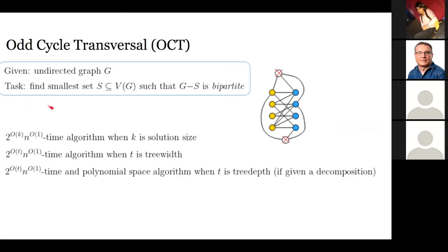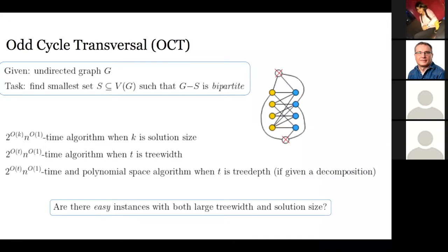Since these parametrizations are incomparable, this leads to a question: can we find an even better parameter that would capture all the tractable instances for both parametrizations and broaden our horizon of tractability? We ask for a new parametrization under which the problem would still be FPT, but better than both solution size and tree width.